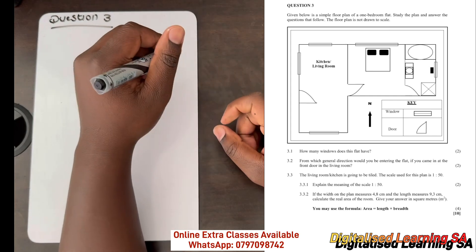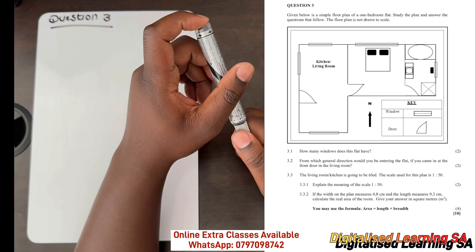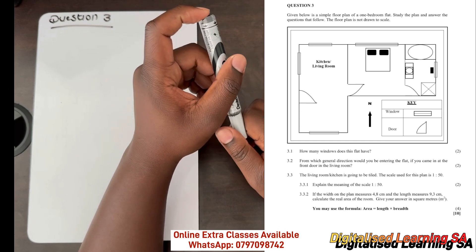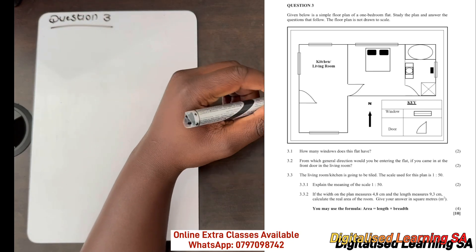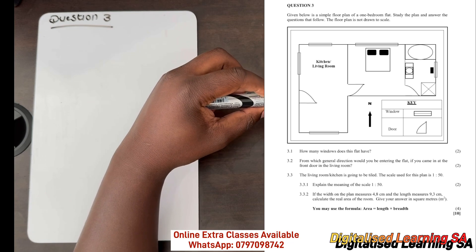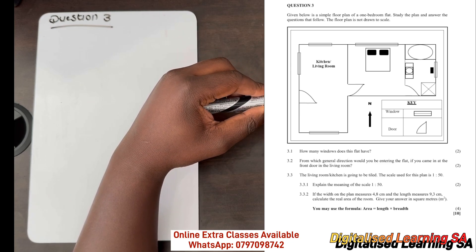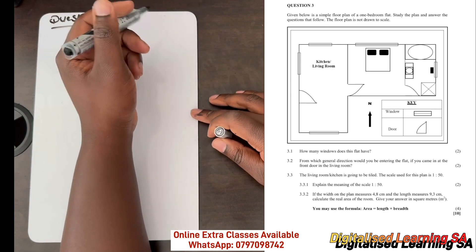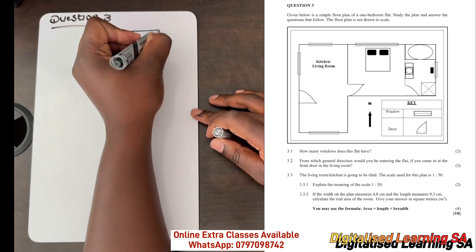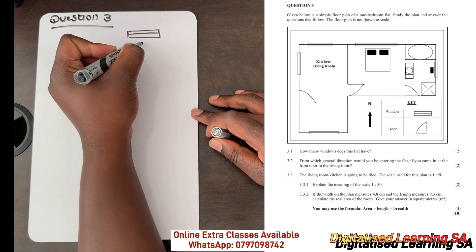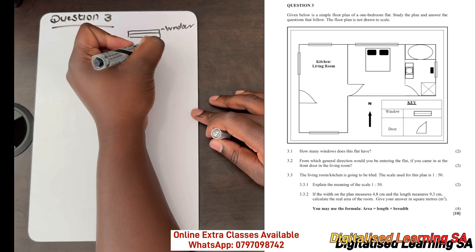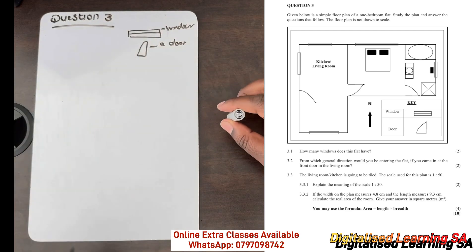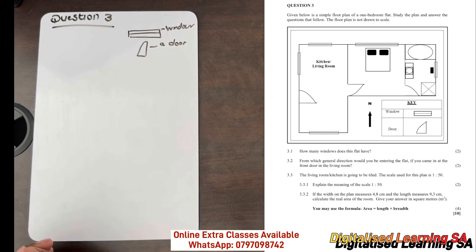We are told that given below is a simple floor plan of a one bedroom flat. The plan has a kitchen which also includes a living room, and it has a bedroom which also has a bathroom inside. We are given two keys: a window is represented by one symbol, and a door is represented by another symbol.